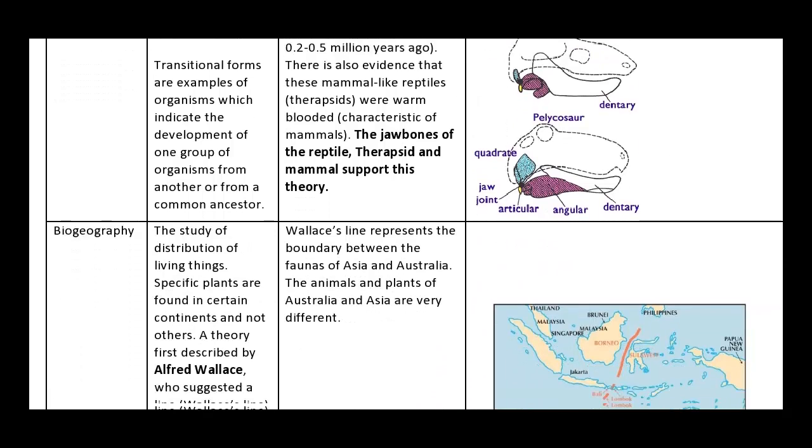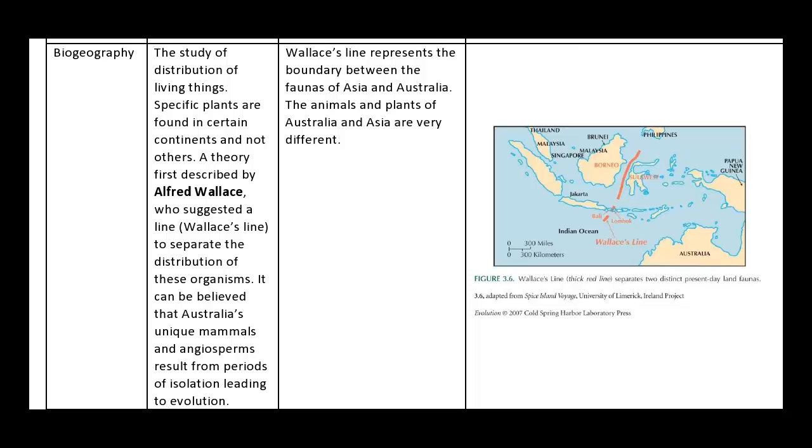Now we'll move on to biogeography. Biogeography is the study of distribution of living things. Specific plants are found in certain continents and not others. A theory which was first described by Alfred Wallace, who's a very famous scientist, really recognized for his evolutionary findings. Wallace actually defined this line. As I've illustrated here, the line is just here near Jakarta and divides Australia from the Asian parts. And what this line actually does is that it separates the distribution of organisms. It can be believed that Australia's unique mammals and angiosperms result from periods of isolation resulting to evolution. So that was his theory.